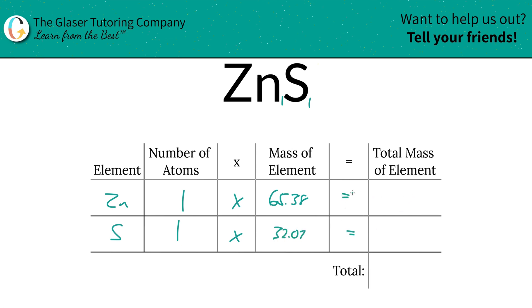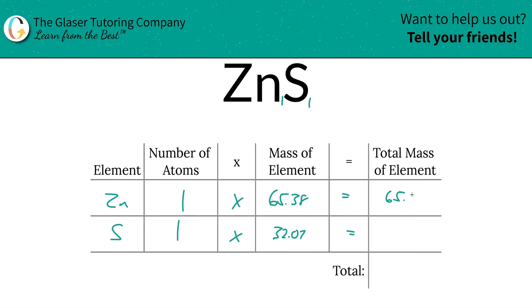Then we're going to find the total mass of the element in the compound by simply multiplying on a cross. This is actually pretty simple in this problem because they're both ones. But you can use the same process in a problem that doesn't have a subscript of one, and you're not going to be lost — you follow this exact process.